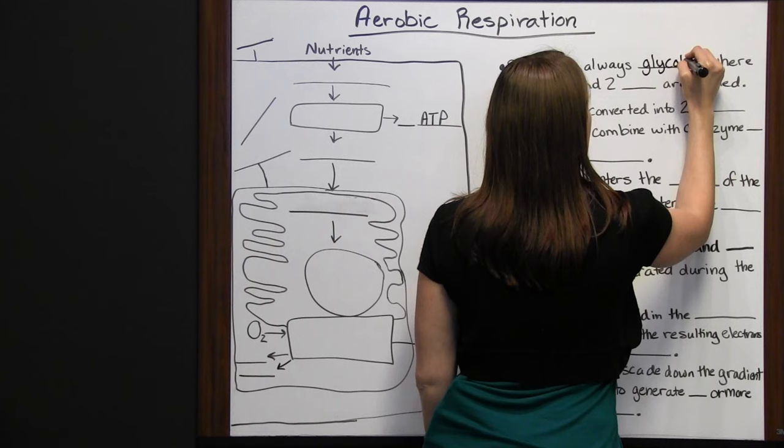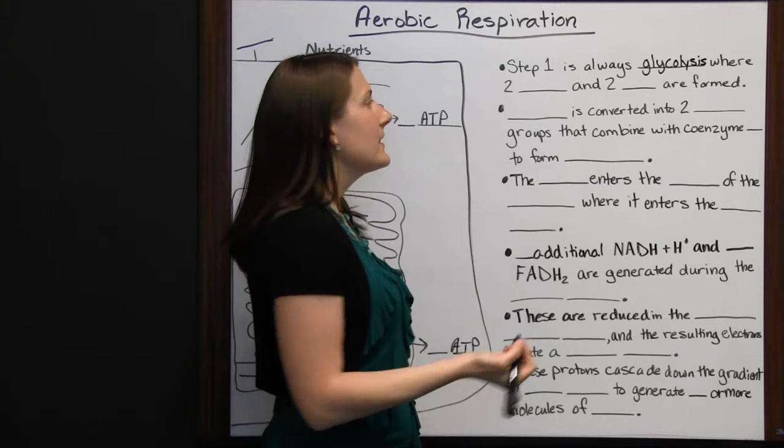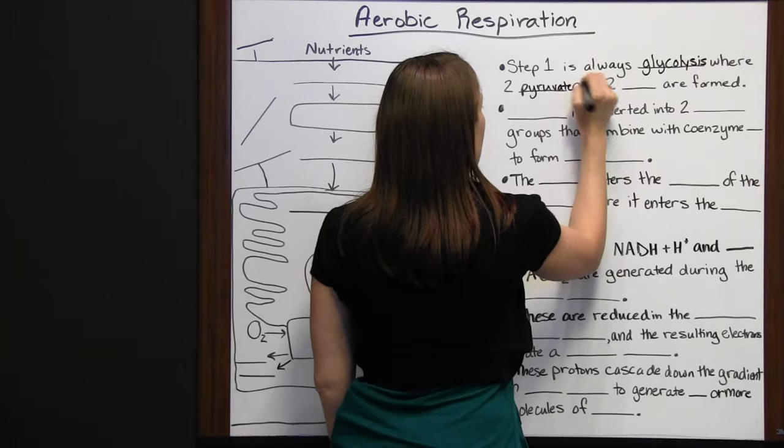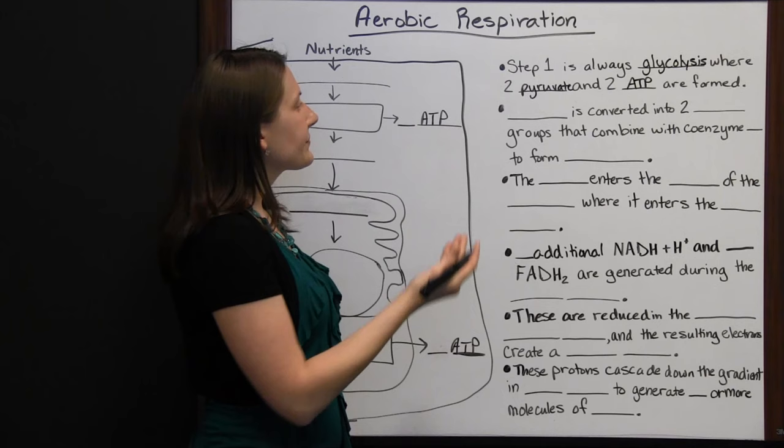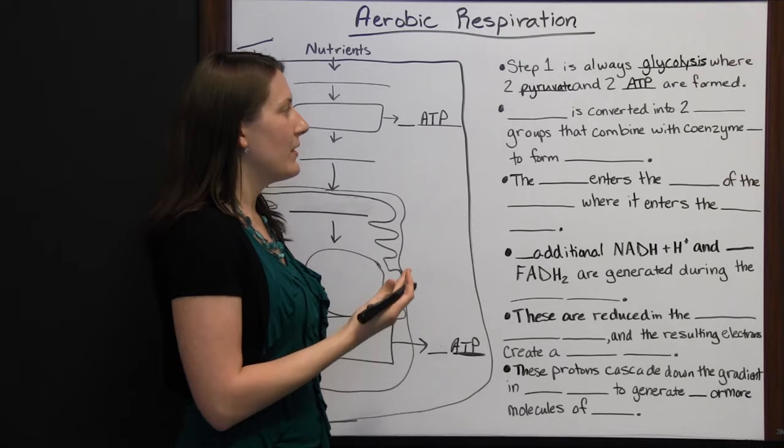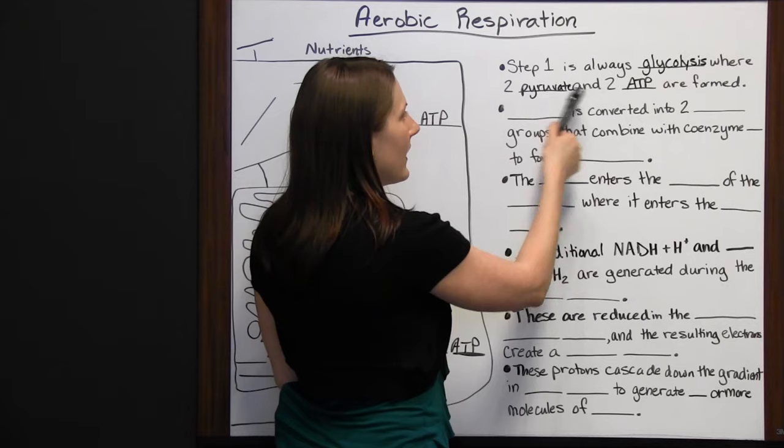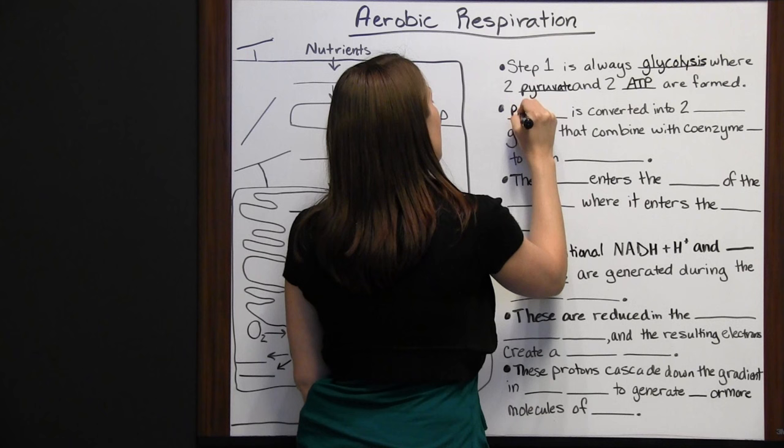In aerobic respiration, step one is always glycolysis. During glycolysis, two pyruvate and two ATP molecules are formed, giving you a little energy and the pyruvate needed to continue the aerobic respiration process.